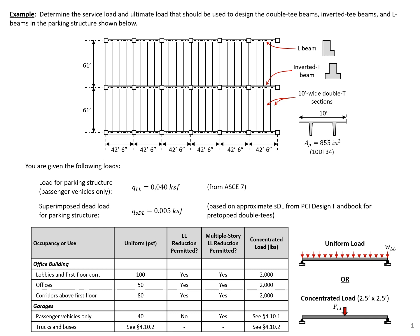In this example problem, we want to determine the service load and the ultimate load that should be used to design the double T-beams, inverted T-beams, and L-beams in the parking structure shown below. We have a basic layout where our double T-beams are pre-topped with a 61-foot span and they frame into L-beams on the outside and inverted T-beams in the middle.